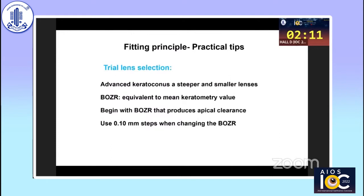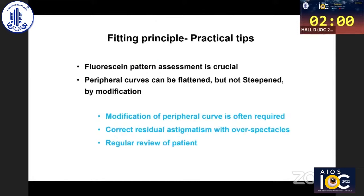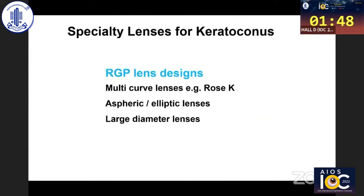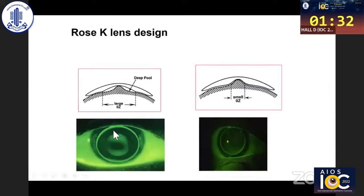For advanced keratoconus, we fit with steeper and smaller lenses. Start with mean K values, begin with a base curve that produces apical clearance, then use 0.1 mm steps to achieve ideal fit. The fluorescein pattern is very important — we assess central fitting first, then the periphery. If standard RGP lenses cannot be fitted, other options include Rose K lenses and larger diameter lenses like Diana intralimbal lenses. Rose K lenses have six curves on the back surface, providing a uniform fluorescein pattern known as feather touch, with much better relationship with the corneal surface compared to a regular RGP.